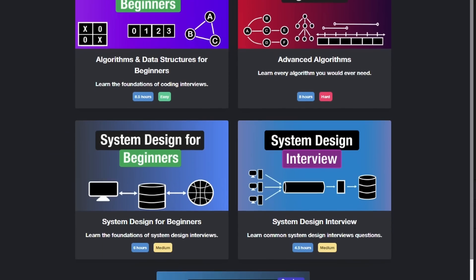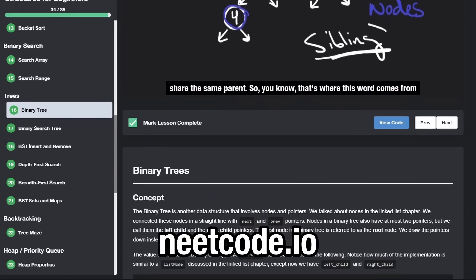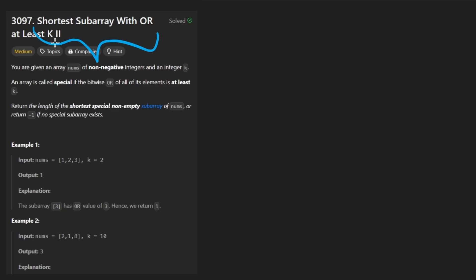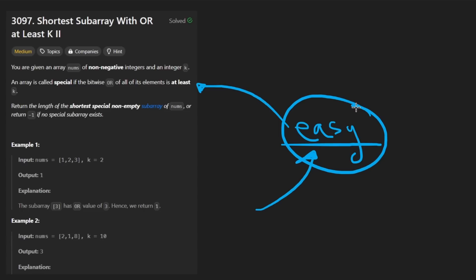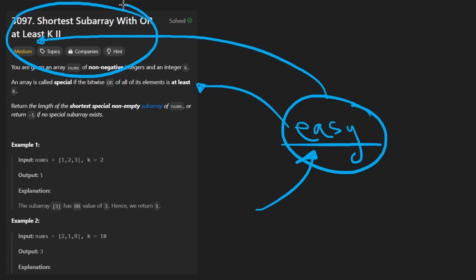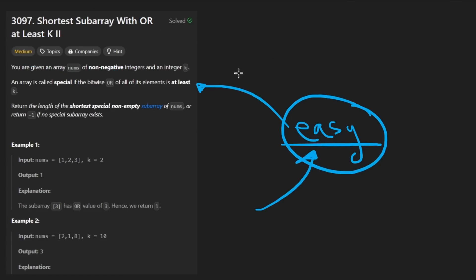Hey everyone, welcome back and let's write some more neat code today. So today let's solve the problem: Shortest Subarray with OR at least K2. This is actually a relatively easy problem — and I'm not saying that to make you feel bad if you weren't able to solve it. I'm saying that because I know for sure that one day you will think this is an easy problem as well. I'll show you the exact thought process you need to solve this kind of category of problems consistently, without failure.